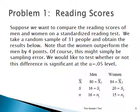Here's a problem. Suppose we want to compare men and women on reading scores on a standardized reading test. We take a sample of 31 people: 16 men and 15 women. Too small to use z, and we don't know the sigmas for the two populations. We'd like to know if the two means are different. We'll test at the alpha equal 0.05 level of significance.